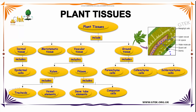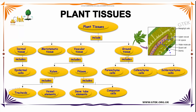In Vascular tissue it includes Xylem and Follum. In Xylem it consists of Trachypes and Vessel elements. Whereas the Follum includes C-Tubes element and Companion cell. The Ground tissue includes Parenheimer cells, Kolenheimer cells, and Schlerenheimer cells.